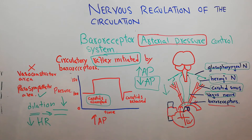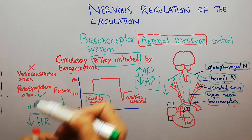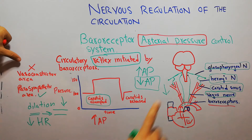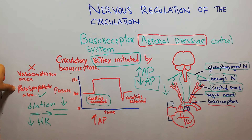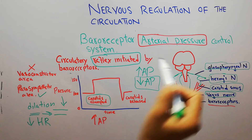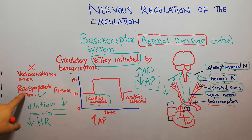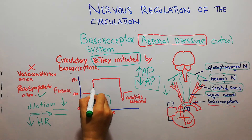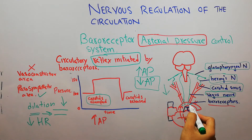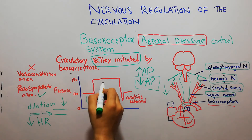When the arterial pressure drops, no impulses are generated — the baroreceptors get inhibited and no impulses are sent to the brain. This leads to the reverse phenomena: when the arterial pressure was increasing, it was causing inhibition of the vasoconstrictor area and activation of the vagal parasympathetic area. But when there is no flow, the reverse occurs — the parasympathetics get inhibited and the vasoconstrictor areas get activated — leading to increased pressure in the aorta.